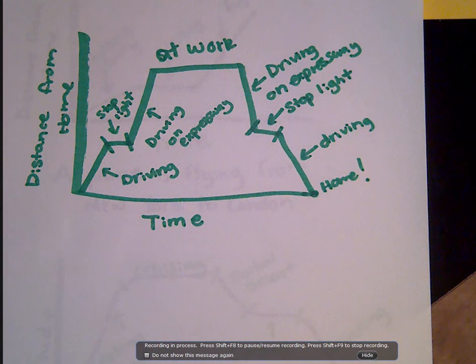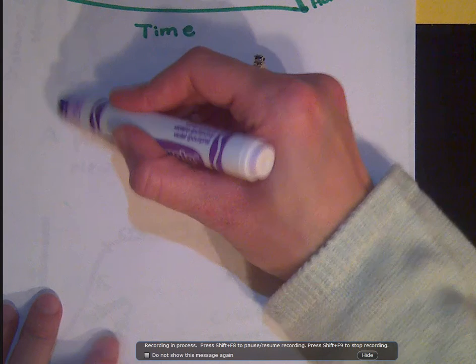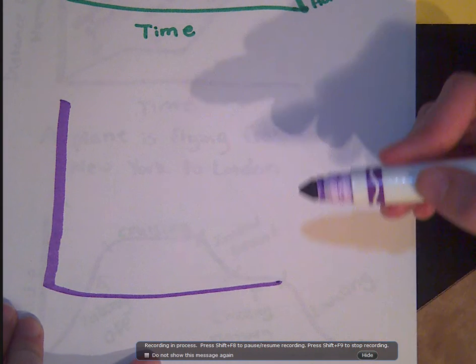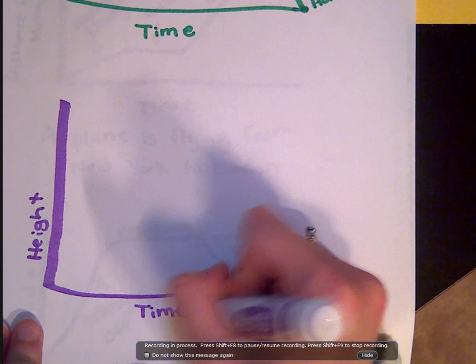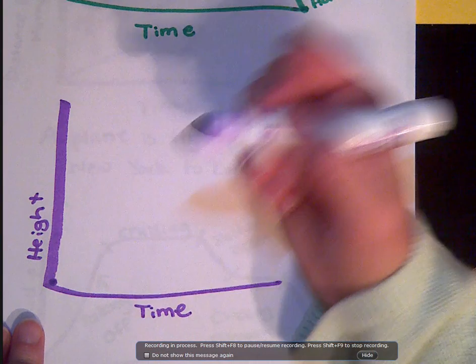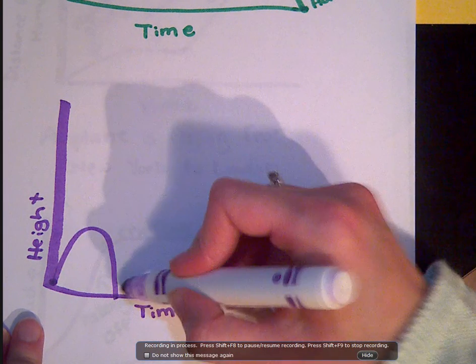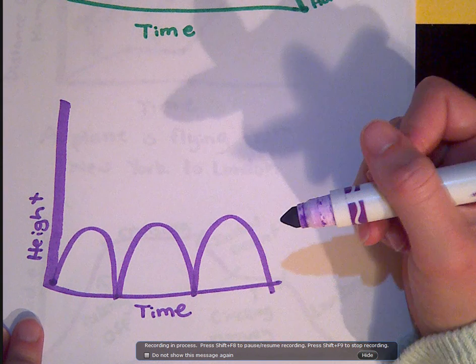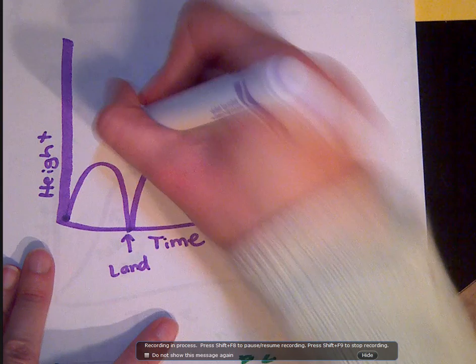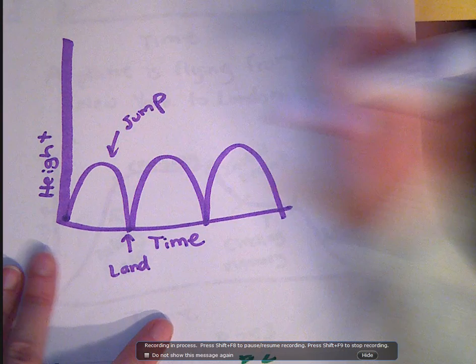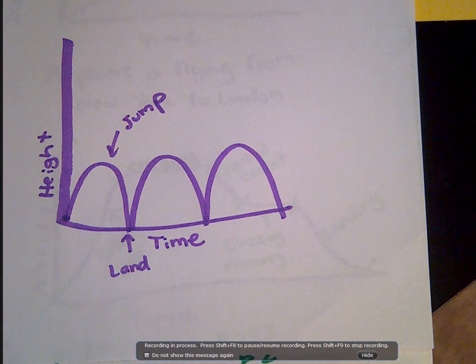Quick Check 2 says: sketch a graph of the distance from a child's feet to the ground as the child jumps rope, and label each section. The y-axis is height and the x-axis is time. Your height increases then decreases, increases then decreases, increases then decreases — repeating. The low points are where you land, and the high points are where you're jumping. That's what the graph should look like.